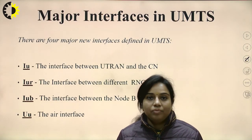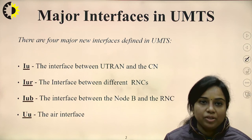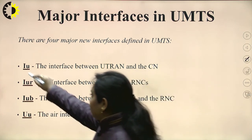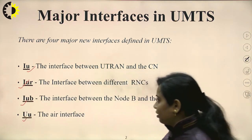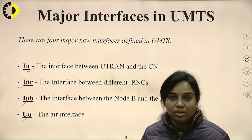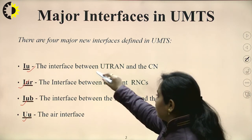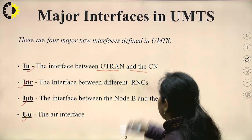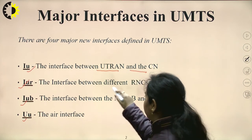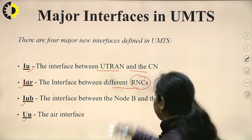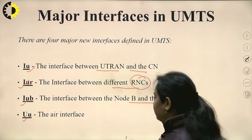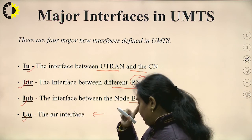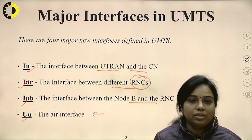There are four major interfaces defined in UMTS: LU (interface between UTRAN and the core network), LUR (interface between different RNCs), LUB (interface between Node B and the RNC), and UU (the air interface). These interfaces define the communication links seen in the UMTS architecture diagram.